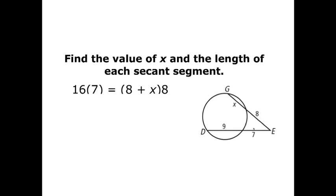So 7 plus 9 is 16, so that's what you're seeing here, the 16 times 7, that's the whole secant times the piece on the outside. And the 8 plus x is the whole secant for GE times the piece on the outside, 8.